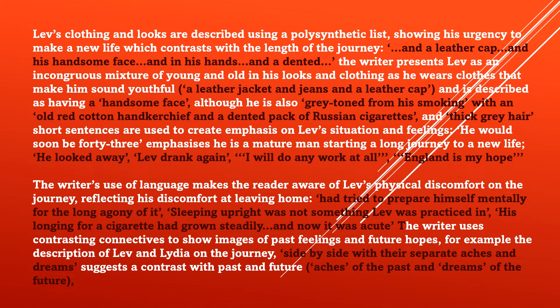Lev's clothing and looks are described using a polysyndetic list, showing his urgency to make a new life, which contrasts with the length of the journey. The writer presents Lev as an incongruous mixture of young and old in his looks and clothing — he wears a leather jacket, jeans, and a leather cap that make him sound youthful, and he is also described as having a handsome face, although he is also gray-toned with his smoking. The older aspect is suggested by 'an old red cotton handkerchief and a dented pack of Russian cigarettes and thick gray hair.'